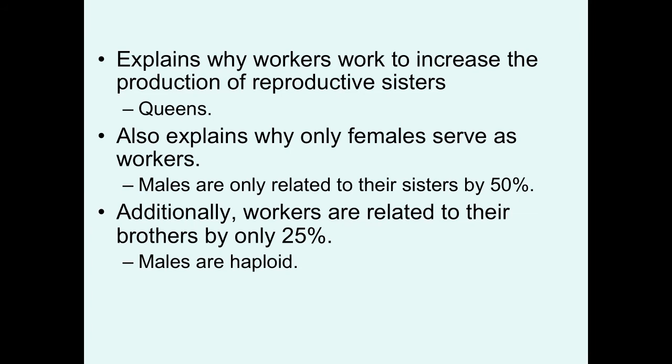Understanding haplodiploidy explains why workers are willing to work to increase the production of reproductive sisters or future queens — they gain a huge amount of indirect fitness. Haplodiploidy also explains why only females serve as workers: males are only related to their sisters by 50% and don't have this genetic predisposition to benefit from indirect fitness. When males are produced, it's only during the reproductive season, and these drones fly off to mate with queens of other hives.